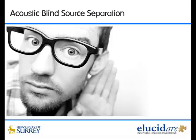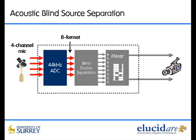This video demonstrates blind-source separation in a multi-speaker, reverberant environment using a compact soundfield microphone array. A compact tetrahedral microphone array is used to capture the acoustic field. Via an A to D converter, the signals are transformed into the ambisonic B format.